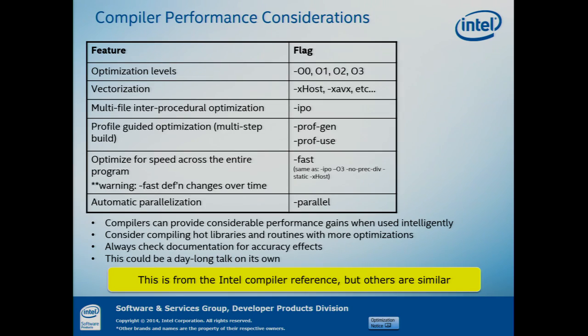The low-hanging fruit at the algorithm tuning level is the compiler. Here's more detail about the compiler switches most common for performance tuning. You probably know your generic optimization levels — the various O flags. O0 is your lowest optimization, and as you increase the number, O3 is the most optimized, though it can introduce some idiosyncrasies. You want to make sure that as you change these optimization flags, you read about what they're actually doing and what guarantees are being changed — some guarantees can be violated at higher optimization levels.